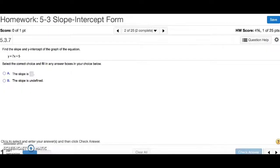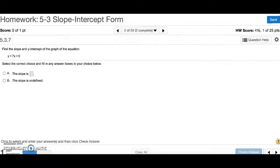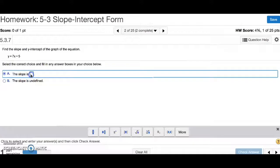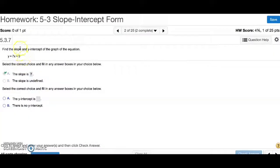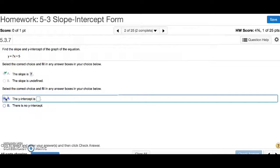Number 2, find the slope and y-intercept of the graph of the equation. So this is in slope-intercept form, which is y equals mx plus b. m is the number in front of x, b is what's being added or subtracted from it. m is the slope, so the number in front of x is 7. So the slope is going to be 7. The y-intercept is going to be what's being added to it, or 5.